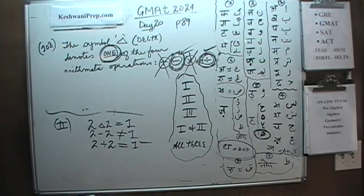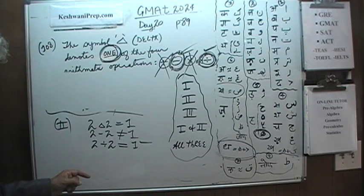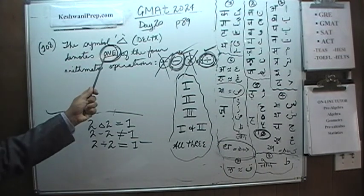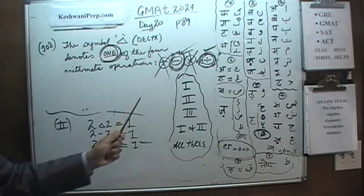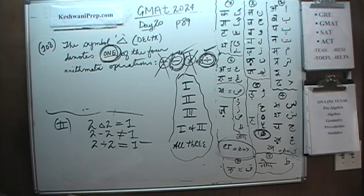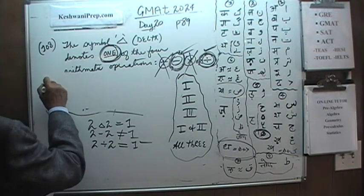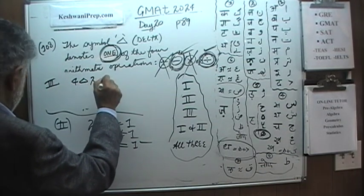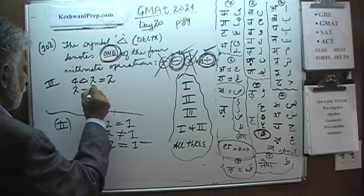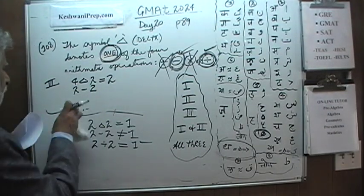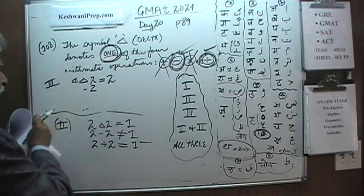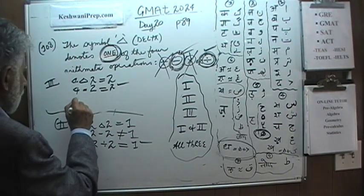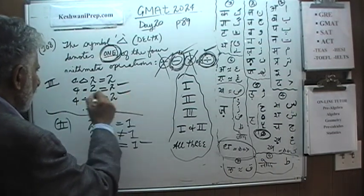So in this case division works but subtraction does not. Let's look at the third one. Again, in second case we cannot tell for sure that this must be true. This may be true. If they are talking about, if by one operation if they mean division then this is true. But if it turns out that by one operation if they mean subtraction that is not true. So this is something that may be true or may not be true. Let's look at the third one. The third one says 4 delta 2 is equal to 2. 4 minus 2, 4 minus 2, that does work. Let's try the division. 4 divided by 2. Oh, that works. You see it works for both of them.